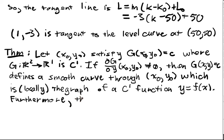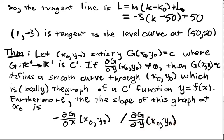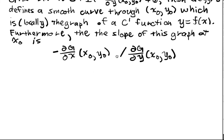Furthermore, the slope of this graph at x0 is exactly negative ∂g/∂x evaluated at (x0, y0) divided by ∂g/∂y evaluated at (x0, y0). And so of course we had to have that this partial with respect to y is not 0 for that to even make sense.